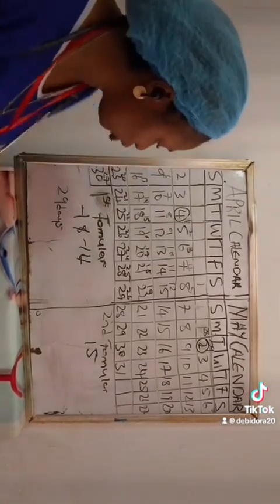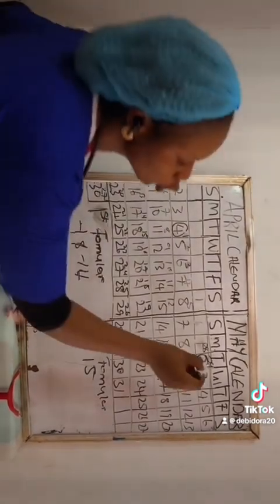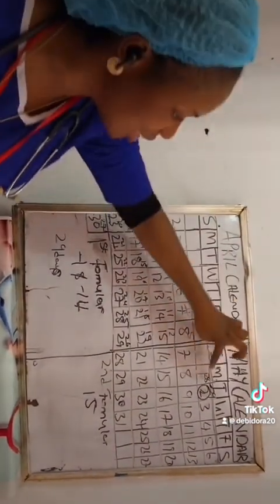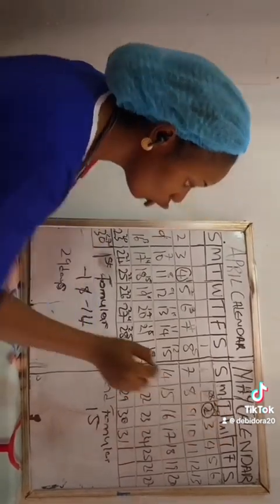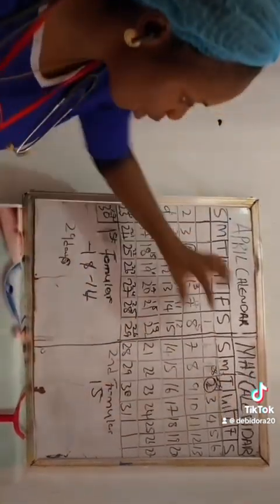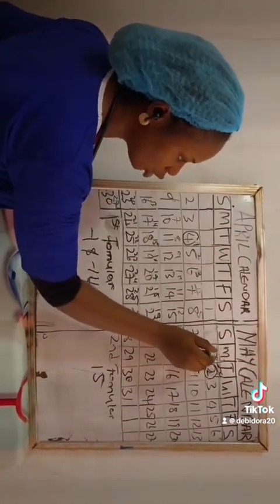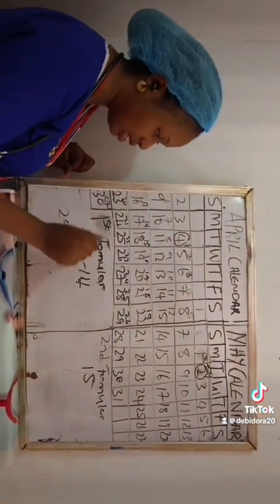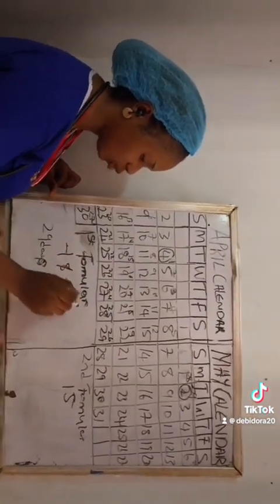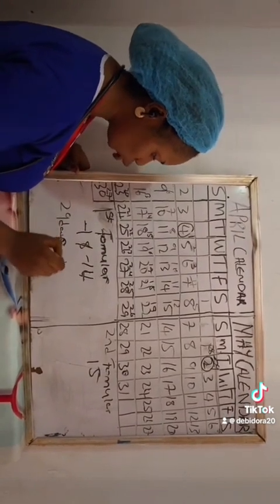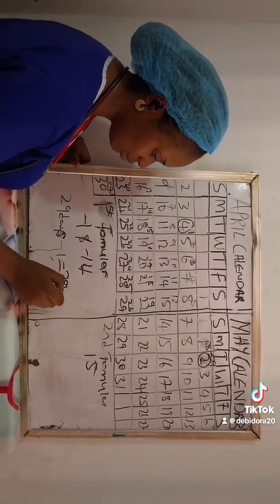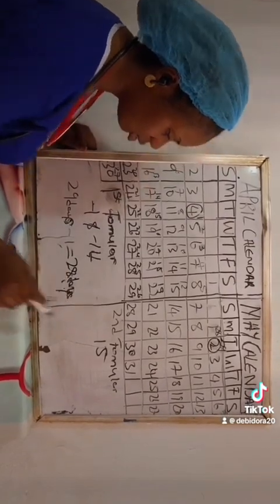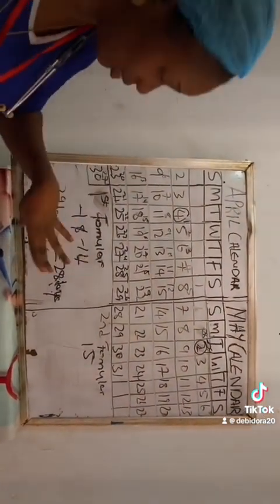Now that you know your count is 29 days, using formula 1 you come minus 1 away from 29, which gives you 28 days. That 28 days is the day before your first period of May — that day before is your menstrual cycle length, which is 28 days. So you minus 1 from 29: 29 minus 1 gives me 28 days.